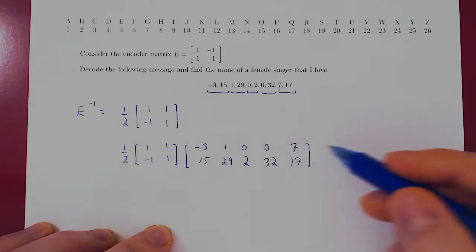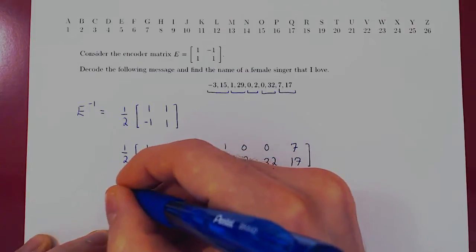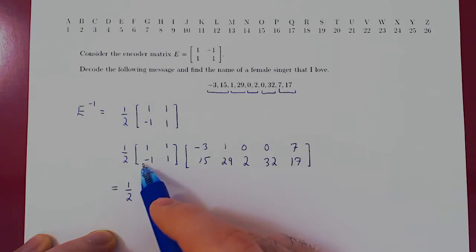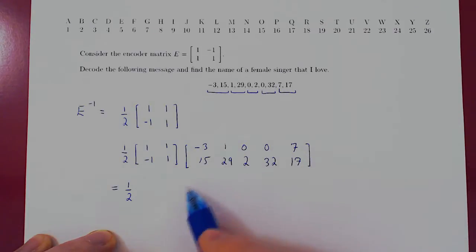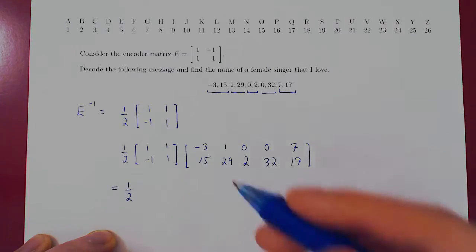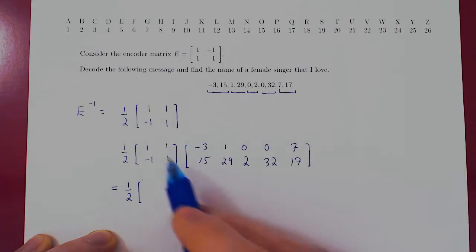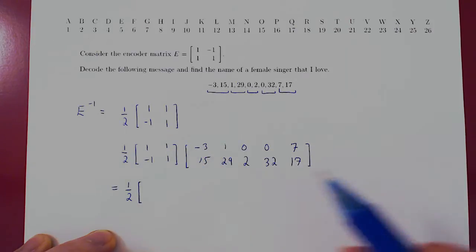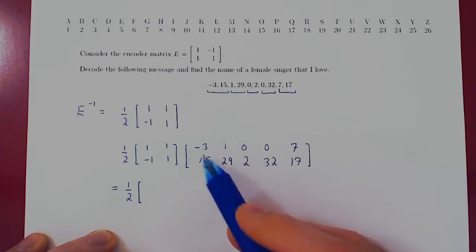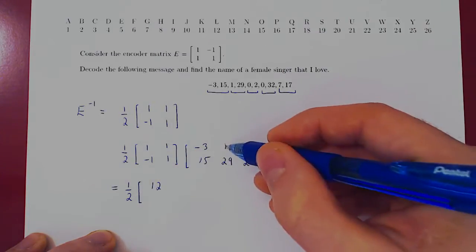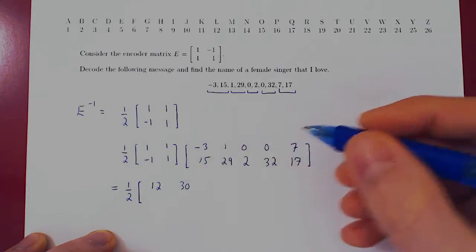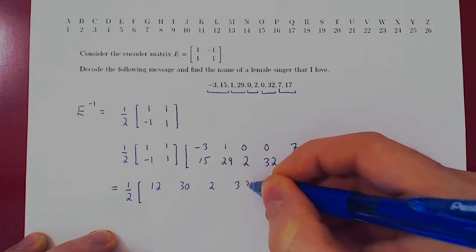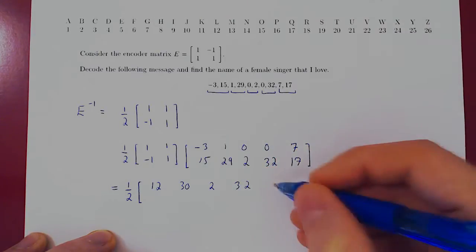Okay, so let's perform this multiplication. Let's leave the 1 half in front for now. Let's multiply our two matrices, and then we'll multiply every entry of our matrix by 1 half. So first row, we'll do first entry plus second entry, so this will be quite easy. So negative 3 plus 15 is 12. 1 plus 29, 30. 0 plus 2, 2. 0 plus 32, 32. 7 plus 17, 24.